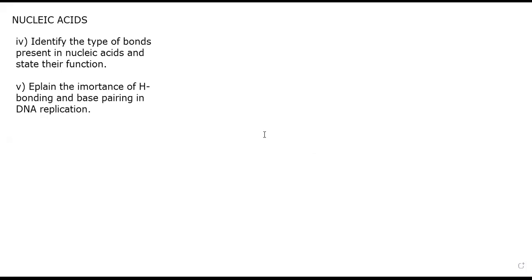Welcome back to our next video. We will be picking up where we left off in part one. We're going to complete objectives four and five: the types of bonds present in nucleic acids and the role they play, as well as explaining the importance of hydrogen bonding and base pairing. In the nucleic acid structure, there are two types of bonds — hydrogen bonding and covalent bonds.